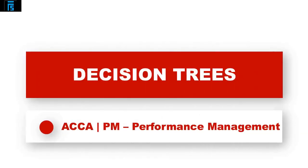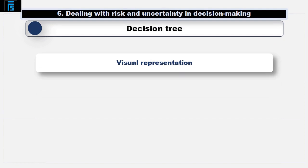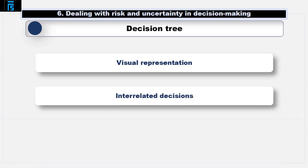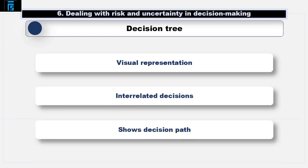In this video, we consider the use of decision trees to help us make staged decisions and to calculate the value of imperfect information such as market research. A decision tree is a visual representation of a set of interrelated decisions that shows the reader a path through from one decision to the next.